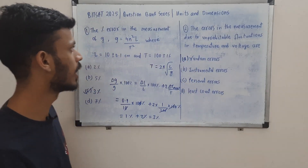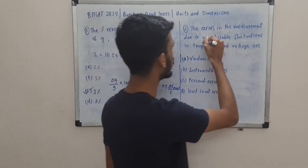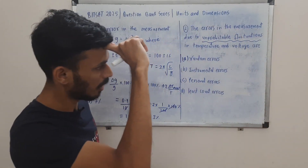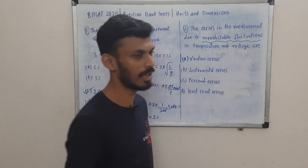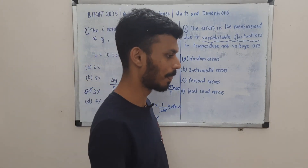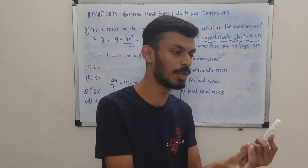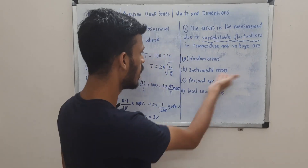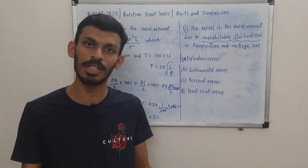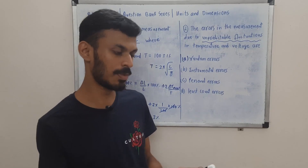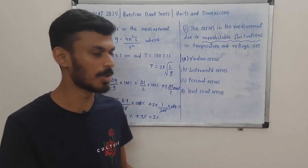Question 2: the error in measurement due to unpredictable fluctuations in temperature and voltage. The key word here is 'unpredictable fluctuations.' You can see that some errors are systematic — instrumental errors arise due to the instrument, like wrong calibration or zero error; personal errors are due to personal bias; and least count error is due to the nature of the instrument. For all of these, you can predict the source. But unpredictable fluctuations means the errors must be random — you cannot predict them.